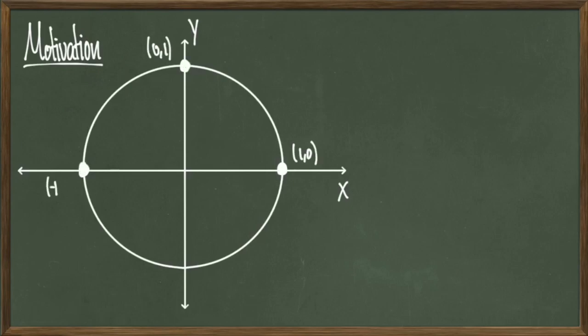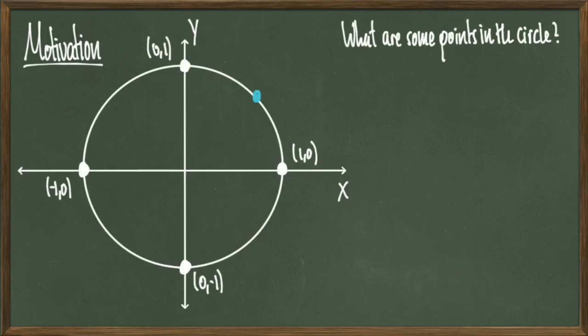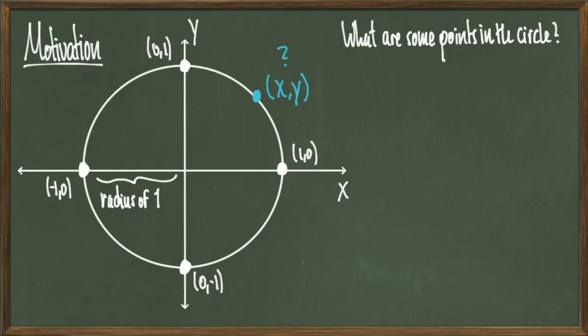Let's start with some motivation. Say that I have a circle on the xy plane that has a radius of 1. Therefore the circle has points (1,0), (0,1), (-1,0), and (0,-1) — these are the points where our circle is intersecting with the x or y axis. But a natural question to ask is if I have another point on this circle, say x and y, what can we say about this point?